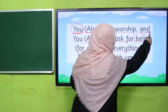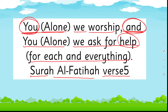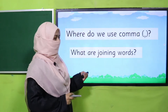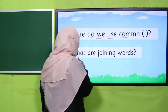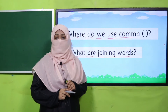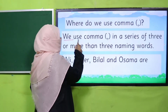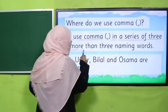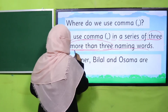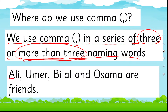My dear children, look here. I have written 'and' — it is joining this sentence and what is coming after it. This is how we use a word as a joining word. Before starting the lecture, tell me: where do we use comma, and what are joining words? Pause the video, answer these questions to your teacher, and then come back. I hope you have answered correctly — we use comma in a series of three or more naming words.